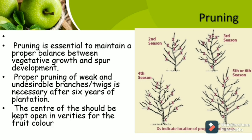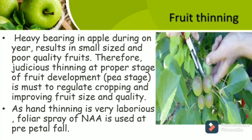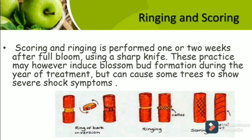Regarding fruit thinning: Heavy bearing of apples during a year results in small size and poor quality fruits. Therefore, judicious thinning at proper stages of fruit development is a must to regulate cropping and improve fruit size. Hand thinning is very laborious, so foliar spray of naphthalene acetic acid is used as a pre-petal fall treatment. Scoring and ringing are performed one or two weeks after full bloom using a sharp knife. This practice may inhibit blossom bud formation during the year of treatment and can cause some trees to show severe shock symptoms.